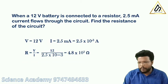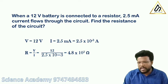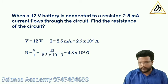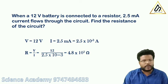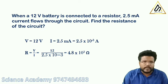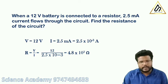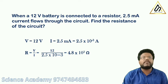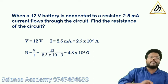When a 12 volt battery is connected to a resistor, 2.5 milliampere current flows through the circuit. Find the resistance of the circuit. The potential difference V is equal to 12 volt and the current is 2.5 mA.